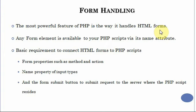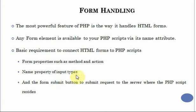All components of a form appear within the form tag. Any form element is available to a PHP script via the name attribute. Using this attribute, a form element will be made available to the PHP script. The basic requirements to connect an HTML form to PHP scripts are form properties such as method and action. Along with that, you have the name property of input types and the form submit button, which is used to submit the request to the server where the PHP script resides.